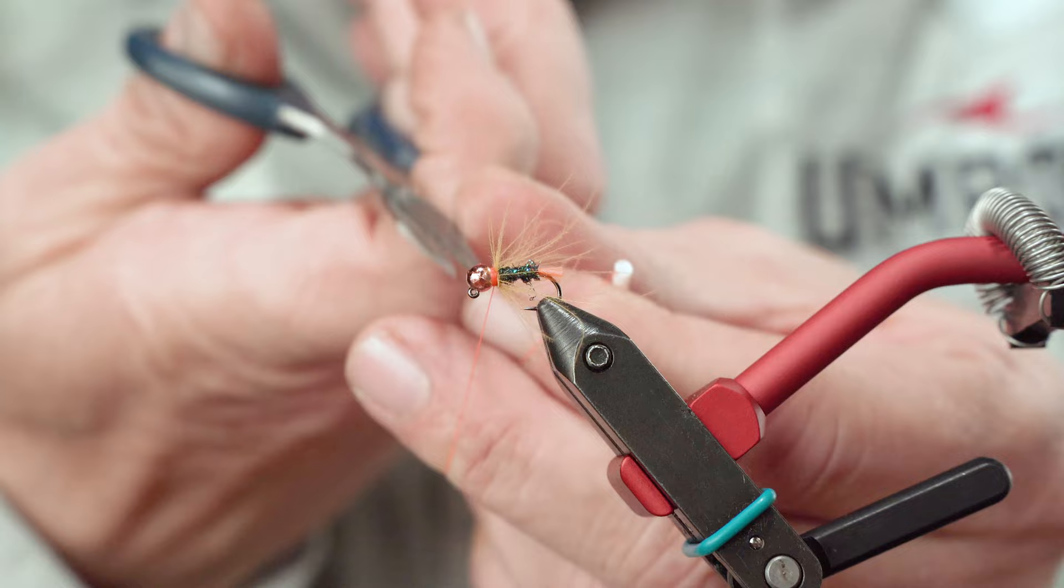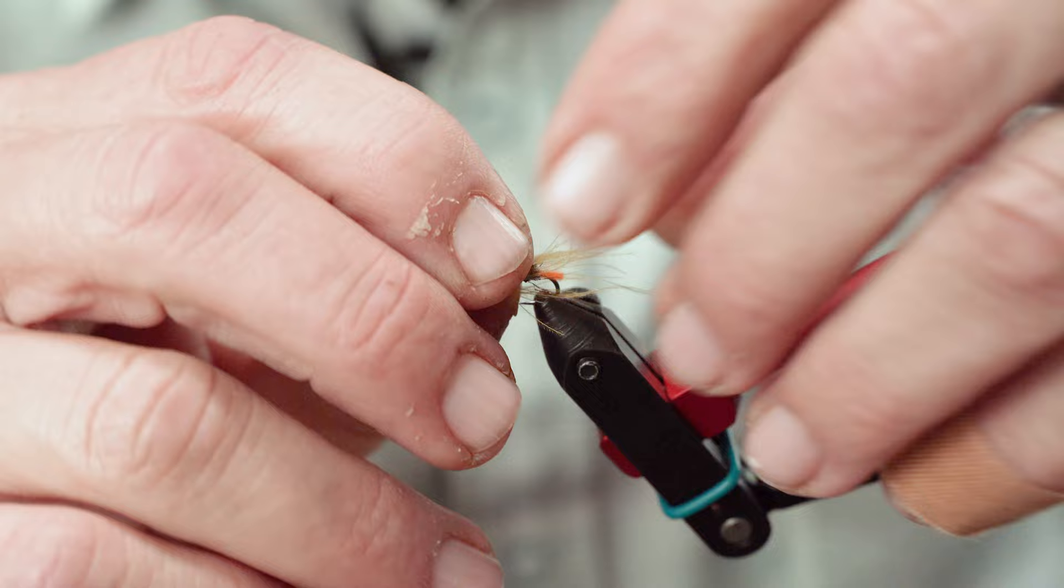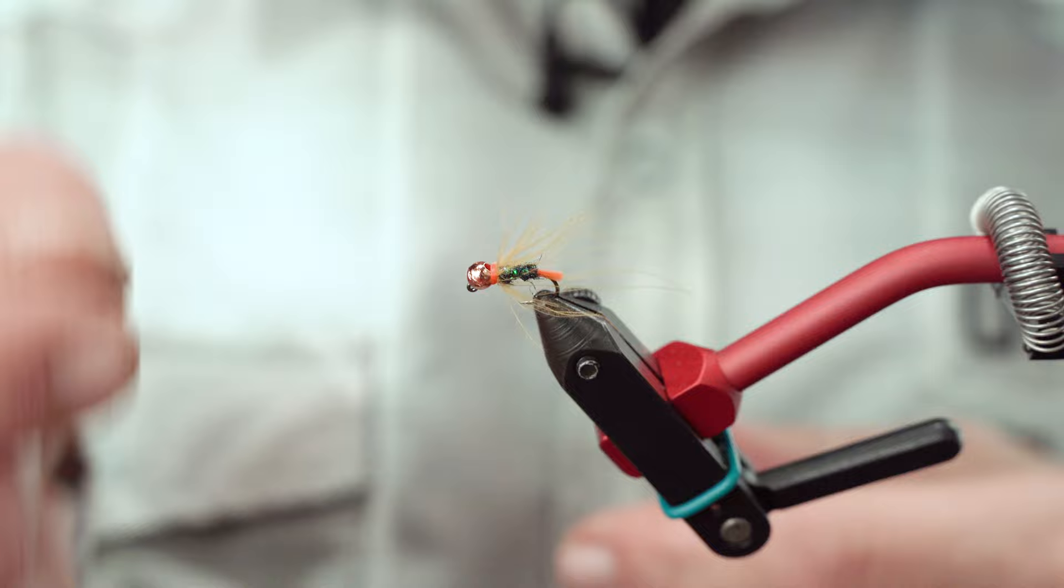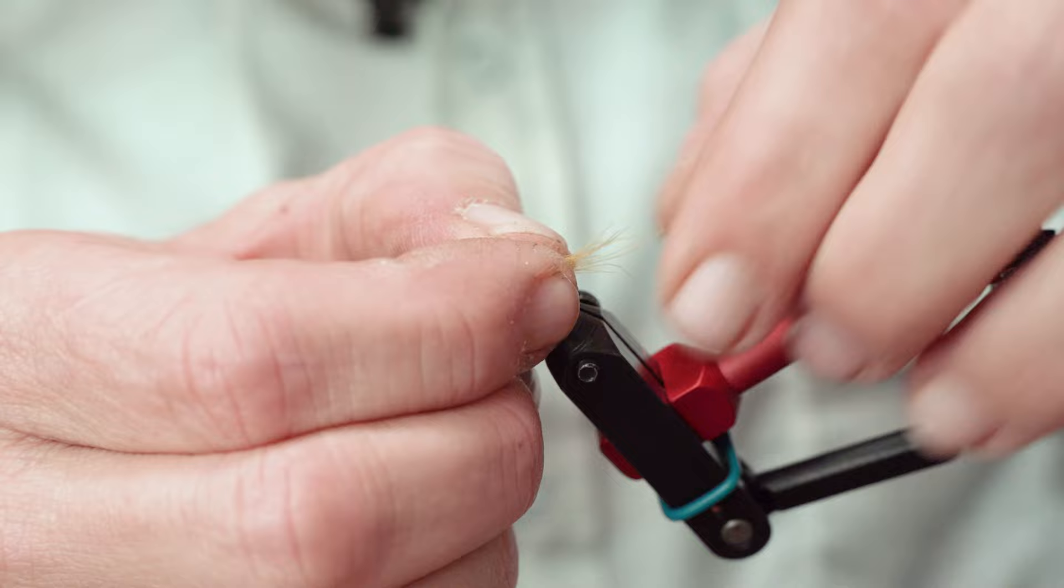And then when you look at your CDC feather, we're going to want to keep this no longer than the tail. And marabou or CDC, those soft feathers, you can always pinch where you want them to be and then just take off the ends and you get a broken feather. And that broken feather really gives you a more natural taper on the end of that fly versus just cutting them.